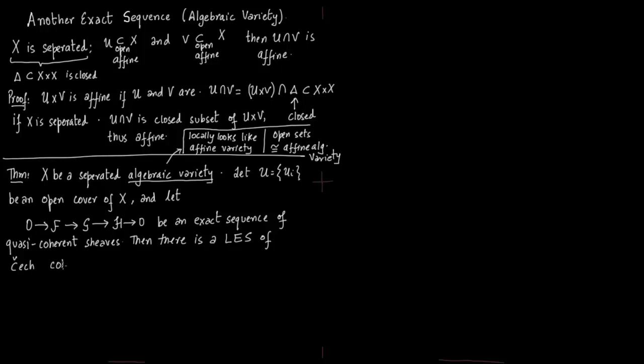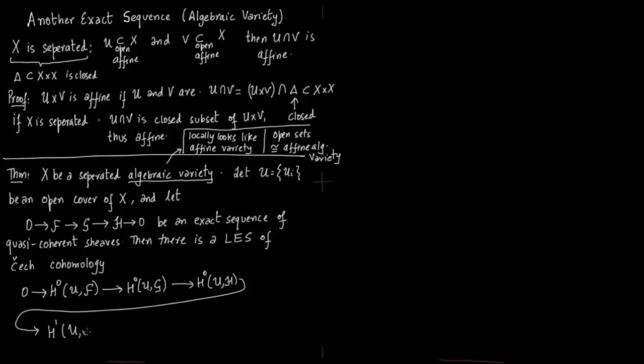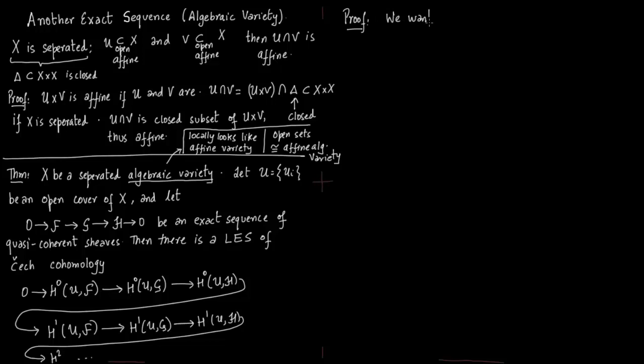The Čech cohomology long exact sequence looks like: H⁰(U, F) → H⁰(U, G) → H⁰(U, H) → H¹ → H² and so on. To derive this long exact sequence we need a complex. If we have a complex, we use the fundamental theorem of homological algebra to get this long exact sequence. So we want a Čech complex in particular.